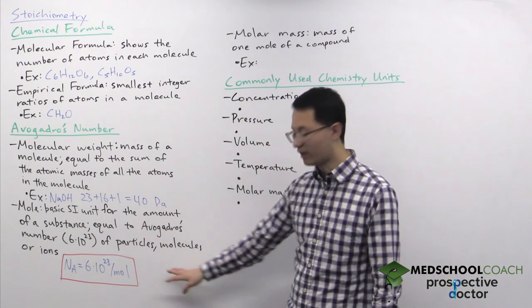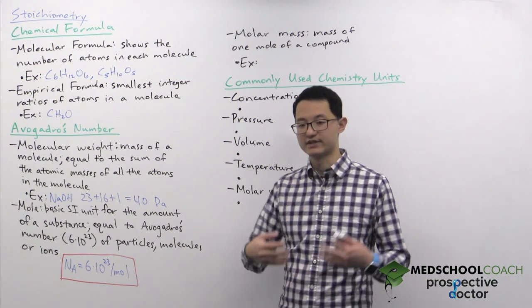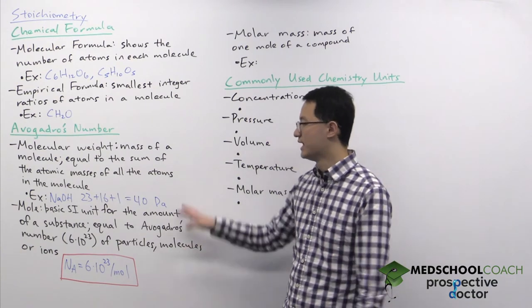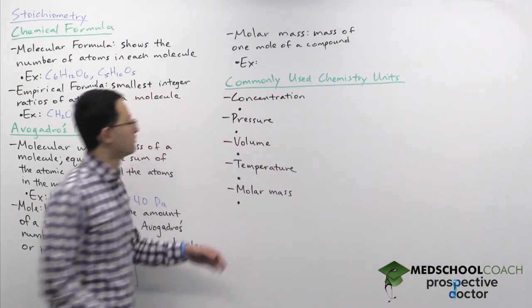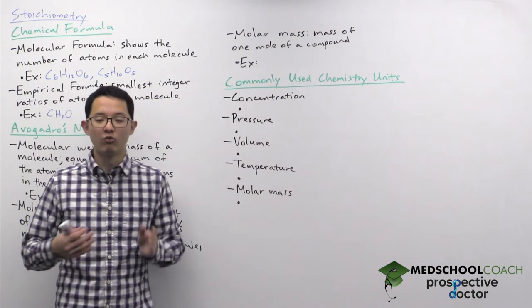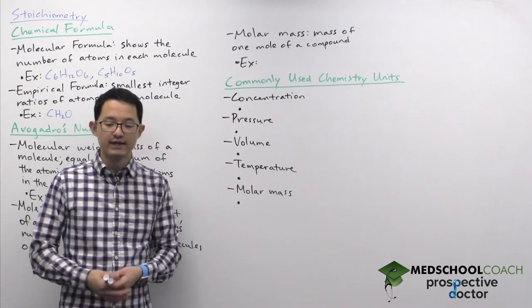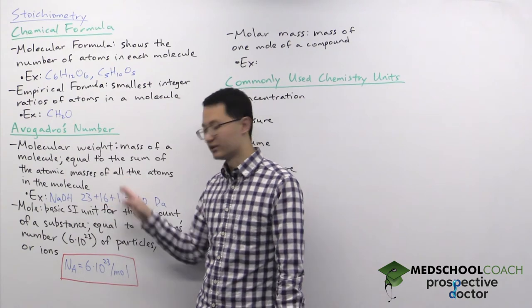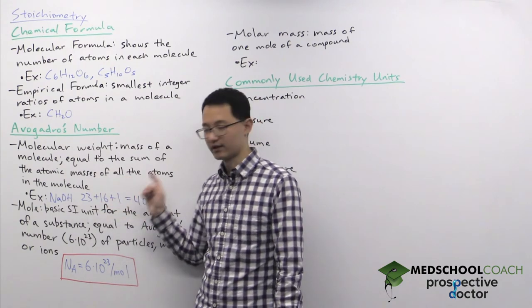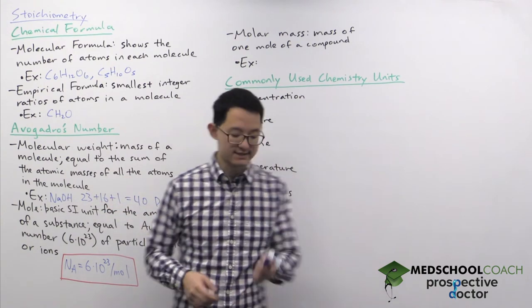The reason why Avogadro's number was developed is because it essentially gives us a nice translation between the molecular weight and the molar mass. So the molar mass is the mass of 1 mole of a compound. And the molar mass essentially is going to have the same number, numerical value, as the molecular weight. But the only difference is the units.